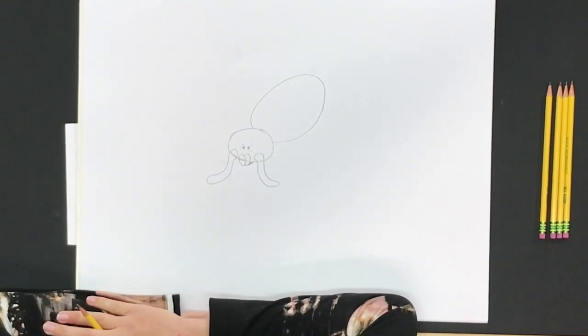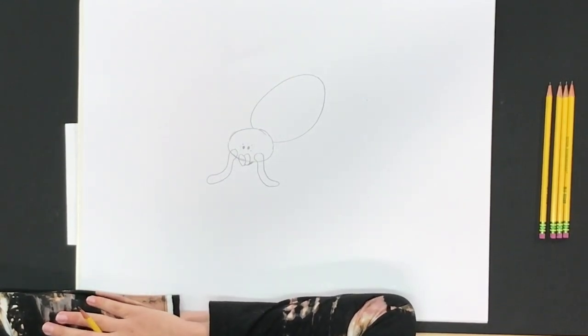Now tarantulas don't have especially sharp eyesight despite all their eyes. Most of what they sense is light and motion. In fact they rely on vibrations to sense their prey and this is part of what makes them amazing nighttime hunters because they don't need the light to catch their prey.